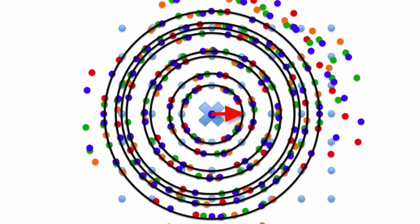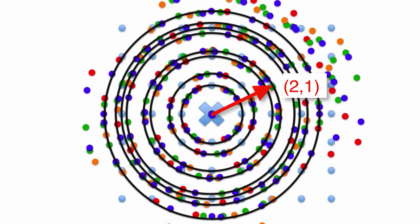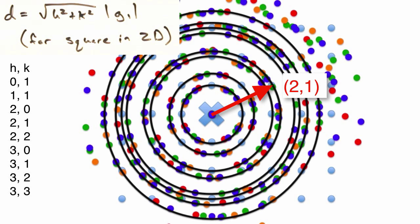I can reach this first sphere by going over 1g1 and 0g2, making this the 1-0 peak, or reflection as it's sometimes called. Since each point is found from an integer multiple of g vectors, can we just use the hk values to determine the distance to each sphere? Yeah, we can. Using this distance equation, we plug in different values for h and k, and can determine the order of their reflections as so.